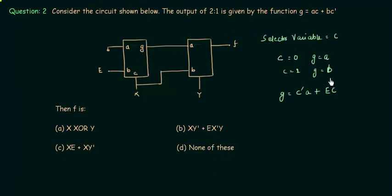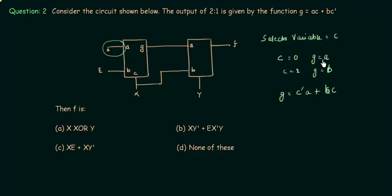So G = C'·A + B·C. Now notice: A is selected when C=1 and B is selected when C=0, which is the opposite of the common assumption. People usually assume that the first input connects when the selector is 0, but you cannot see inside the circuit block — the internal wiring may be reversed. So you must verify before solving. In this case, when C=0, B links to G, and when C=1, A links to G.